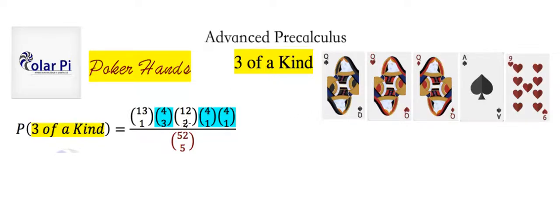That's what this 12 choose two does. And then of course for these two cards we need to choose suits for them. So for this ace there are four possible suits and we choose one, and for the nine four possible suits we choose one.